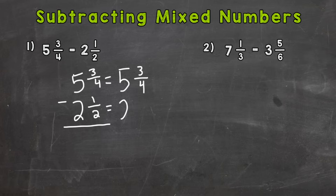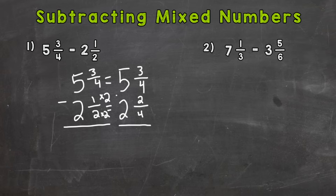Now 2 and 1/2, though, we're going to need to rename. So let's think: 2 times 2 gives me that denominator of 4, so I need to do the same thing to the top in order to properly rename. So we would do 1 times 2 is 2. Now we have our problem rewritten with a common denominator.